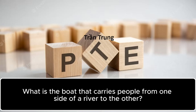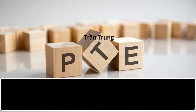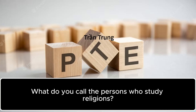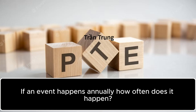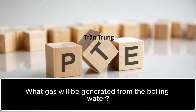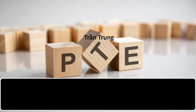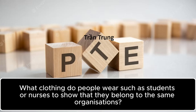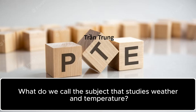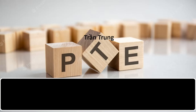What is the boat that carries people from one side of a river to the other? Ferry. What do you call the buildings of a university or college and the land around them? Campus. What do you call the persons who study religions? Theologists. If an event happens annually, how often does it happen? Once a year. What gas will be generated from the boiling water? Steam. What clothing do people wear, such as students or nurses, to show that they belong to the same organizations? Uniform. What do we call the subject that studies weather and temperature? Meteorology.